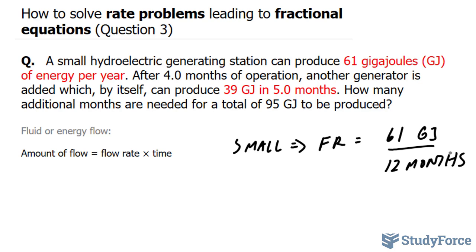Whereas for the next generator that's being added, let's call it the large generator. It has a flow rate of 39 gigajoules every five months.